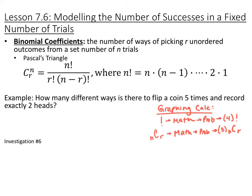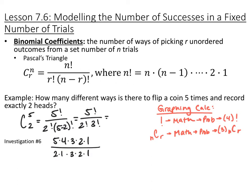So how many different possibilities for that? N would be 5 because you have 5 trials, and R would be 2 because you want 2 outcomes. So you'd have 5 factorial over 2 factorial times 3 factorial. The 3 times 2 times 1 cancels in the numerator and denominator, leaving 5 times 4 divided by 2 times 1, which is 20 over 2. So there are 10 different ways. You could also use the NCR button on your graphing calculator.